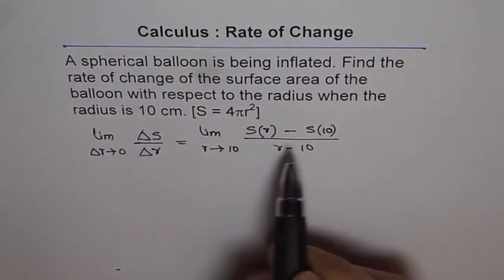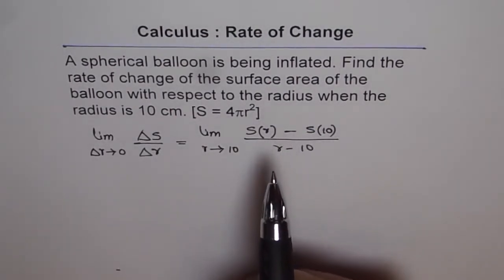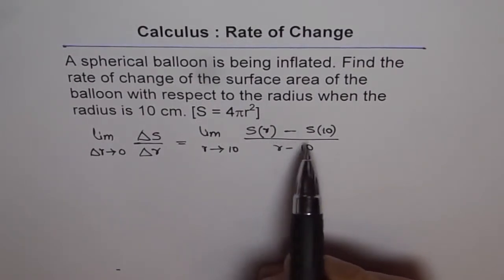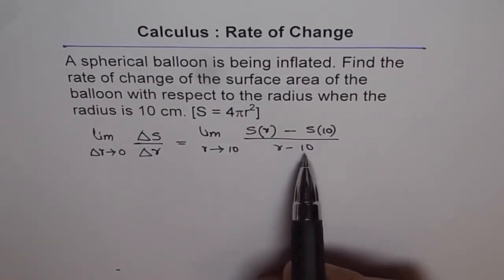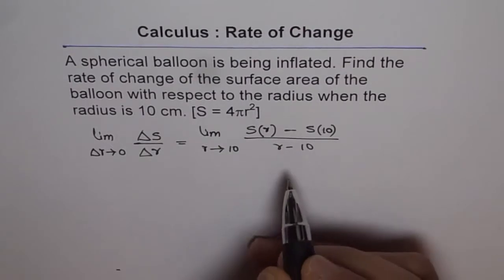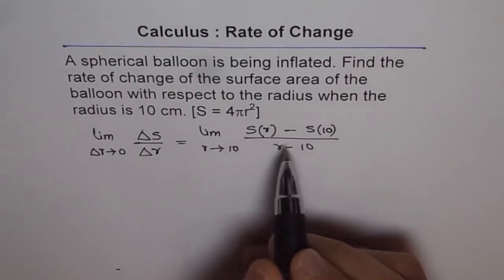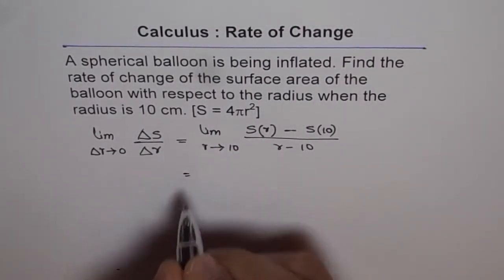Now, that becomes an instantaneous rate of change of surface area with respect to radius when the radius is approaching 10. Do you see that? That is what it means. So now we can apply the formula, expand and simplify.